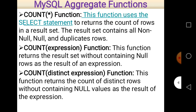COUNT(*) uses the SELECT statement to return the count of rows in a result set. The result set contains all null, non-null, and duplicate values. So if a table contains different values — whether non-null, null, or even duplicate rows — COUNT(*) counts all of them. It doesn't matter; it counts each and everything. Whenever you put an asterisk within the parentheses of COUNT, it simply means that it counts everything.